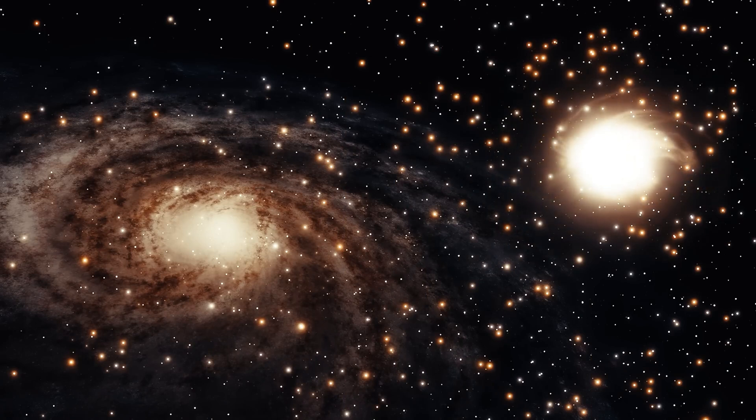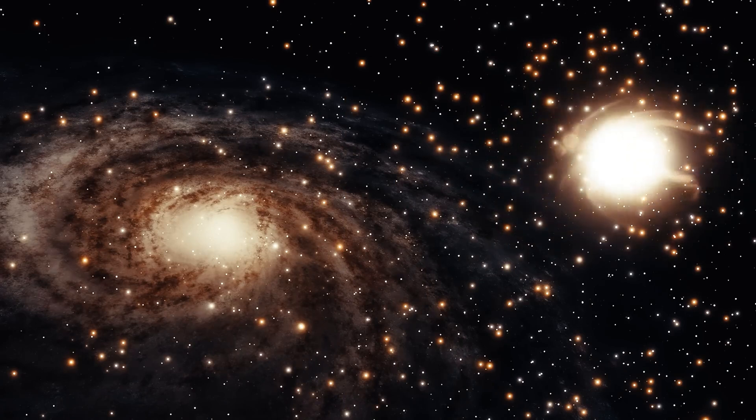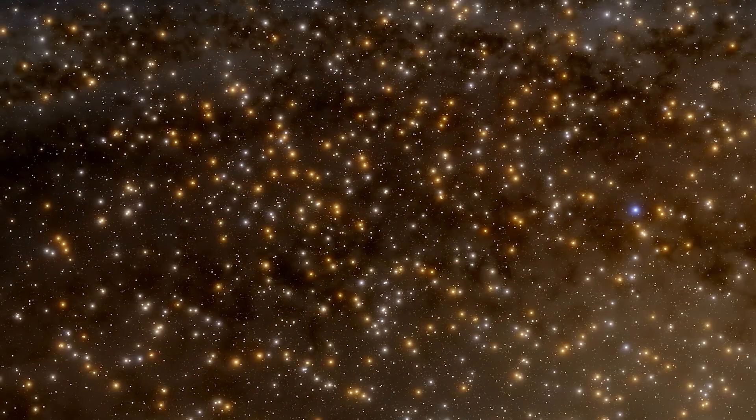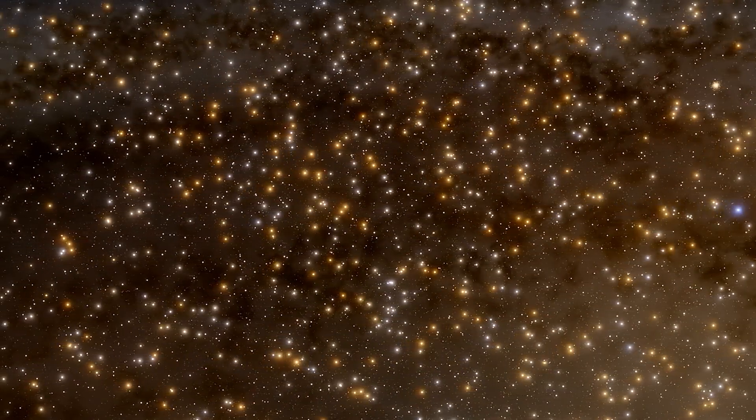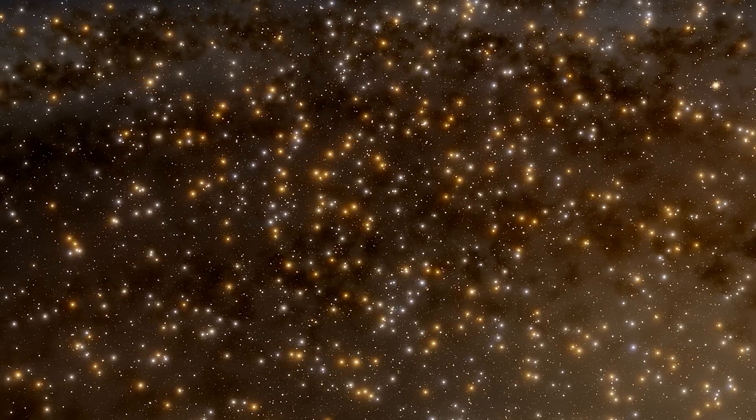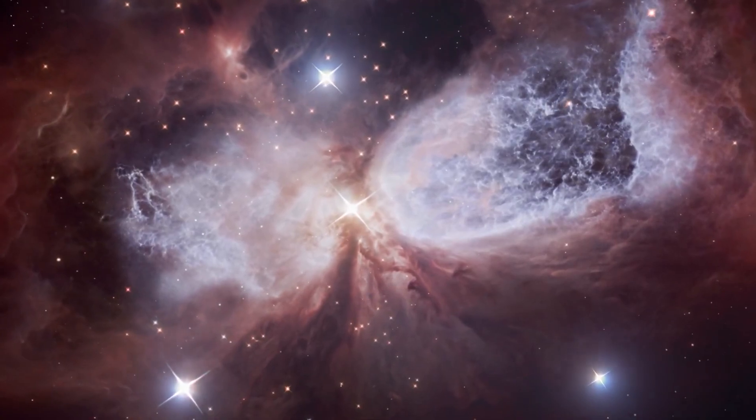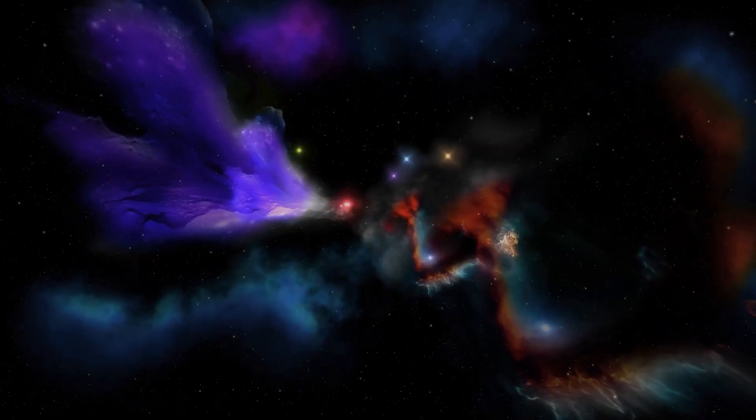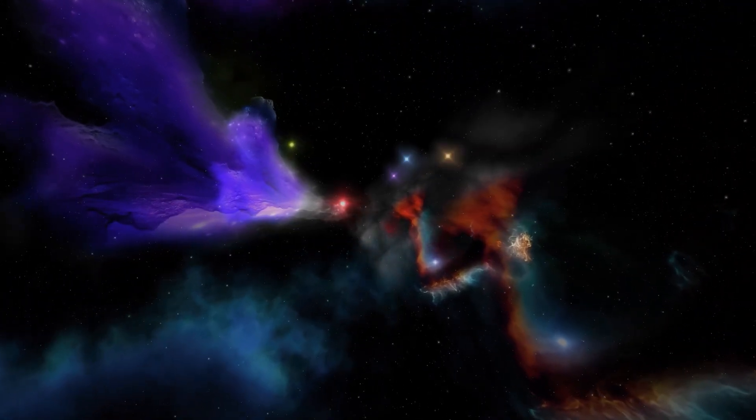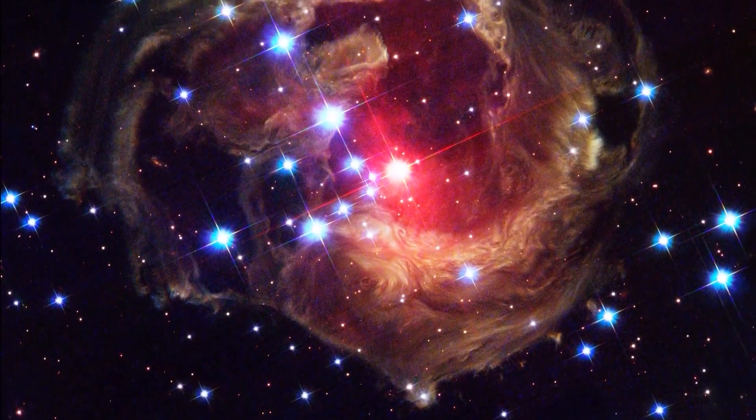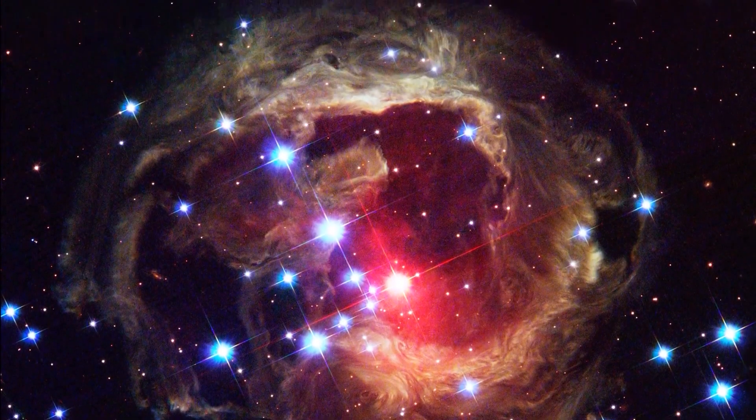When these cosmic giants exploded, they scattered these heavy elements throughout the vast cosmic space. Subsequently, population 2 stars appeared, formed a little later at the dawn of the universe. These stars are composed mainly of lighter materials in heavy elements, especially iron.